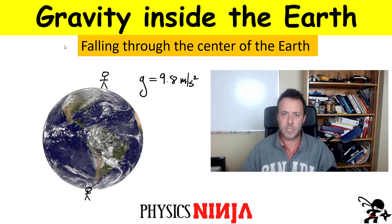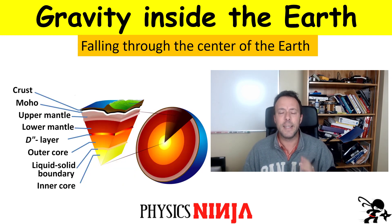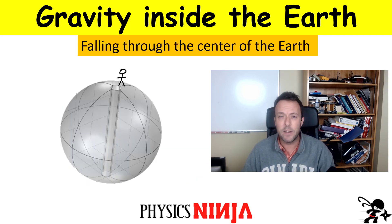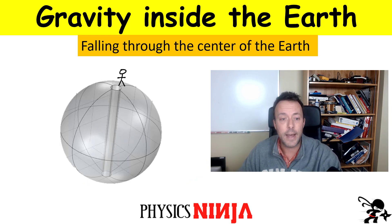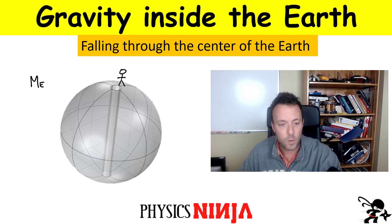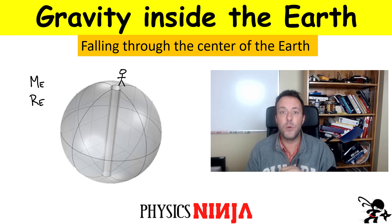We have to make an approximation. Digging through the center of the Earth is way too complicated because the Earth has way too many layers, and that makes the problem way too complicated. So what we're going to do is take a simplified model of the Earth. We're going to represent it by a single sphere and dig a tiny hole right through the center. Our sphere is going to have the same mass as the Earth and the same radius - we'll call it the radius of the Earth.